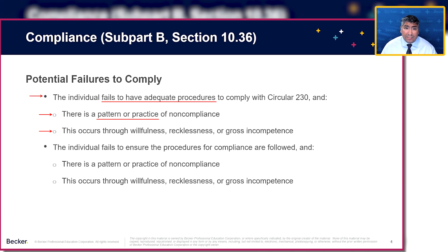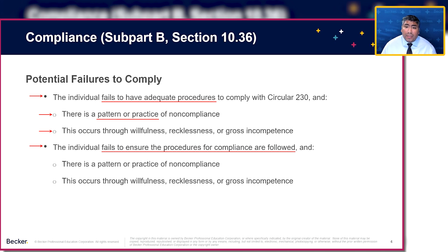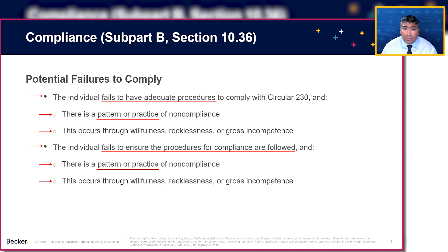Just not having adequate procedures isn't enough to be considered failing to comply. There also has to be either a pattern or practice of noncompliance, or willfulness, recklessness, or gross incompetence. If everybody's following the rules, there isn't a necessary requirement that they're going to hold you to for not having adequate procedures. Of course you should always have them, but in order for this to be considered failing to comply, both of these components must exist.